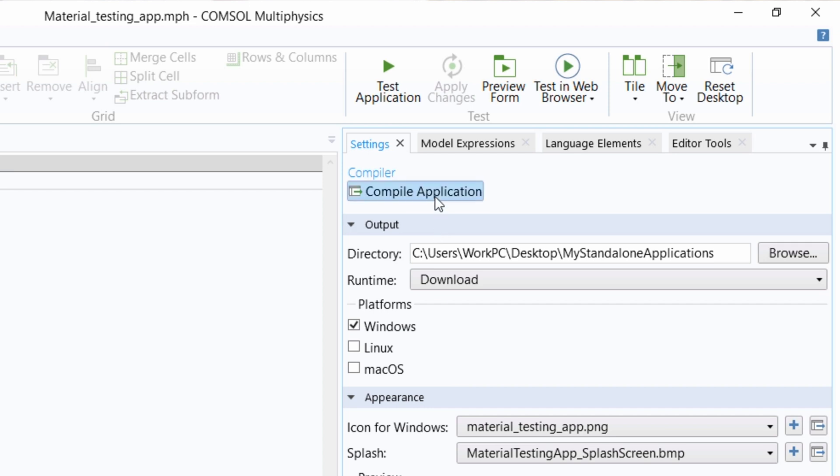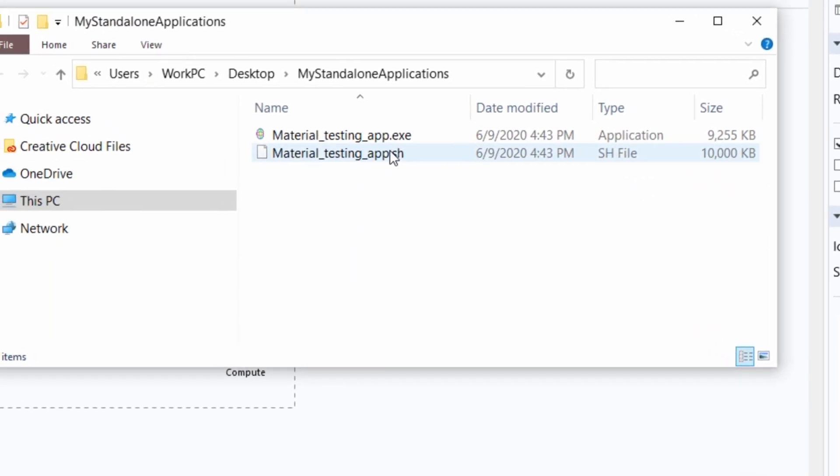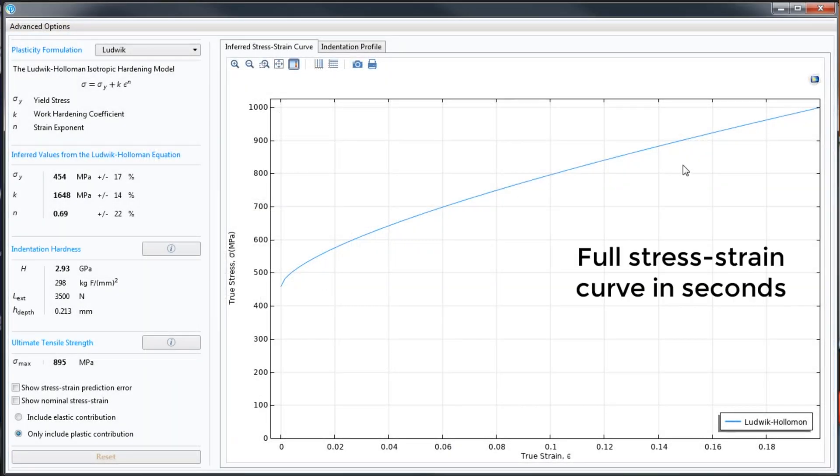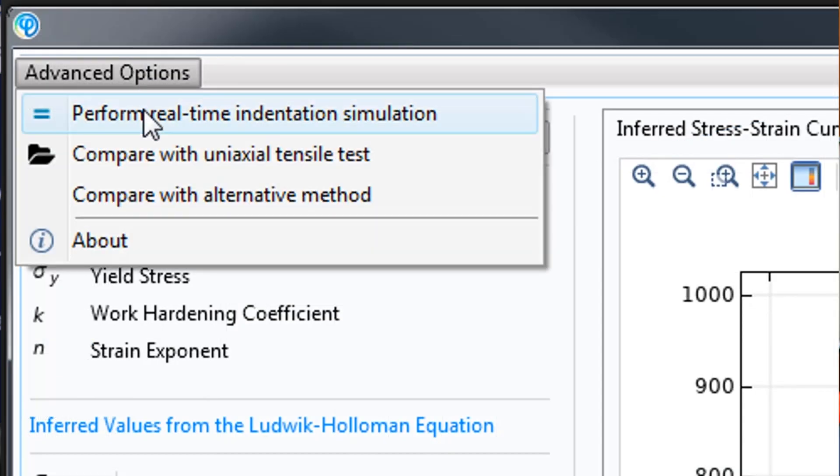With the advent of COMSOL Compiler, our business case suddenly became extremely strong. It enables us to generate as many standalone executables of our application as we like, and that allows us to distribute at very low cost. Because of that, we've been able to build an entire business based on COMSOL Compiler and COMSOL technology.